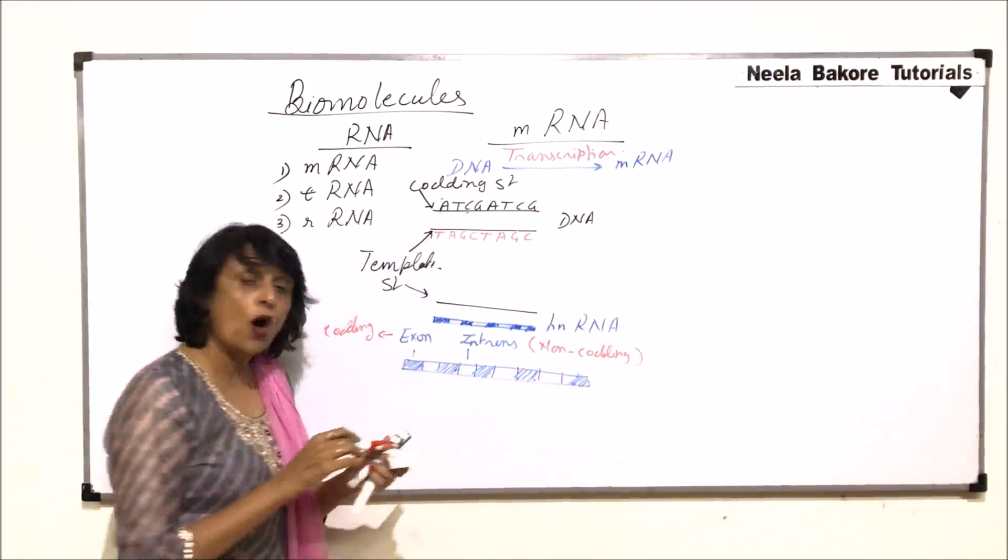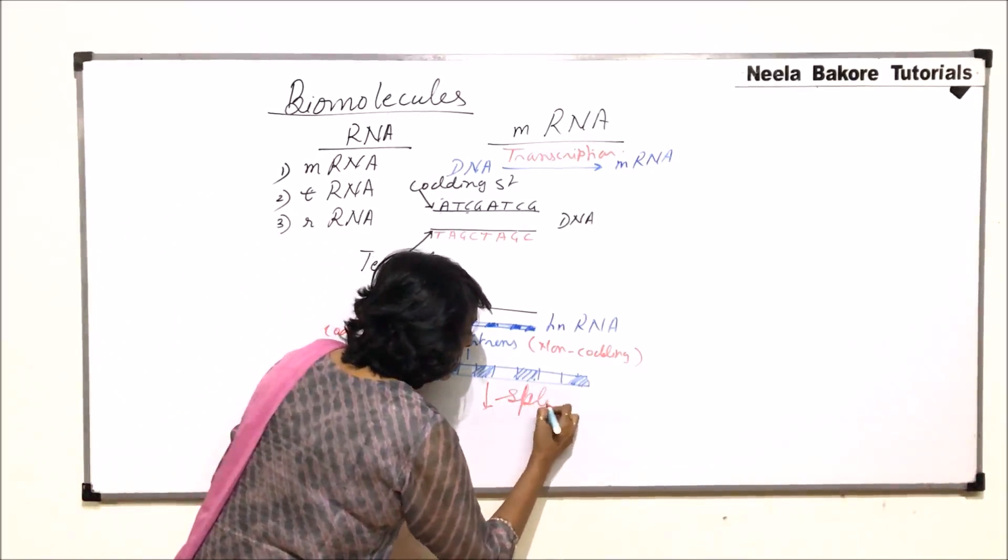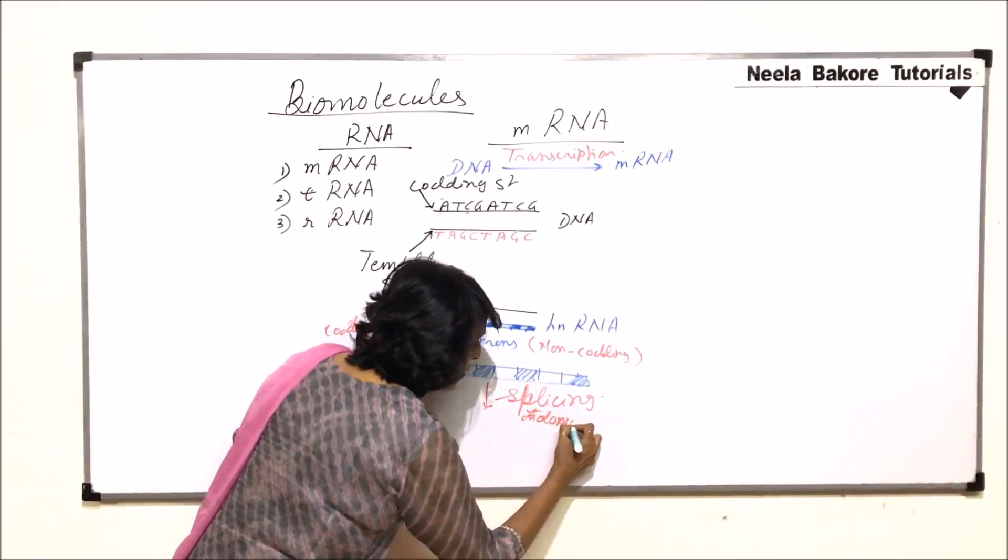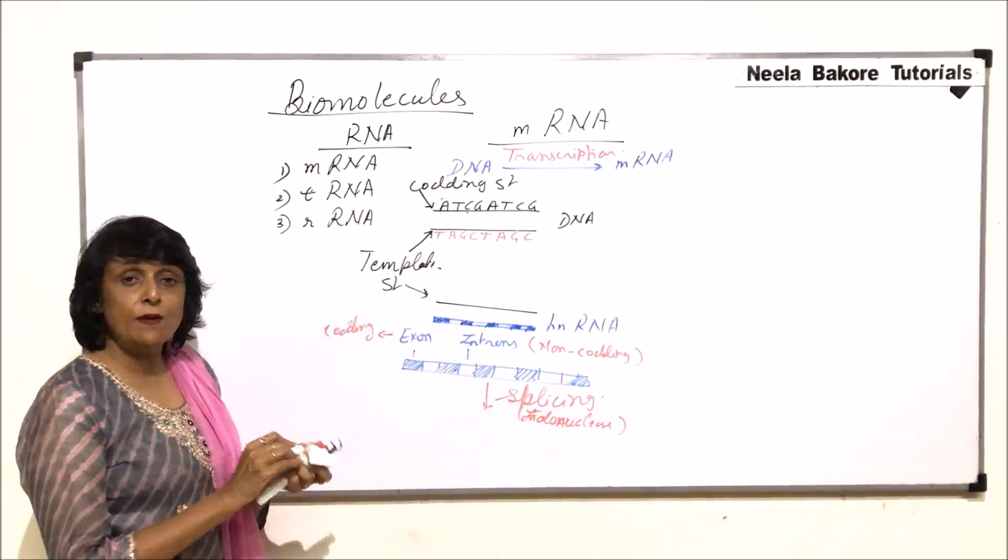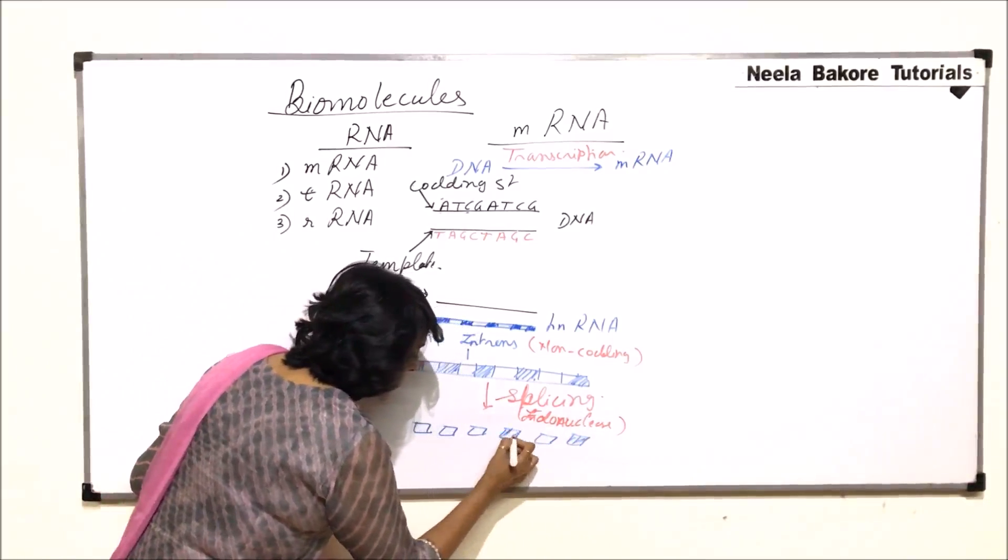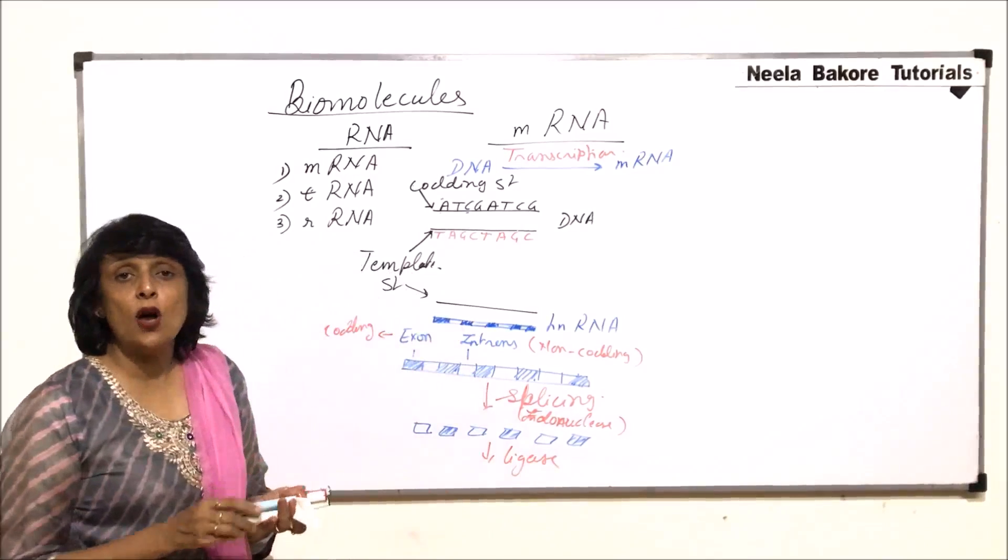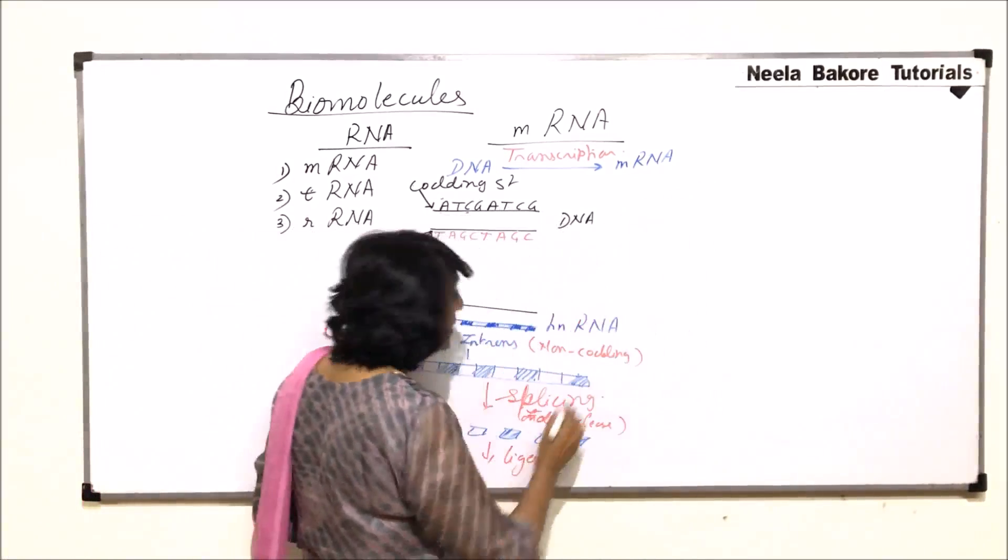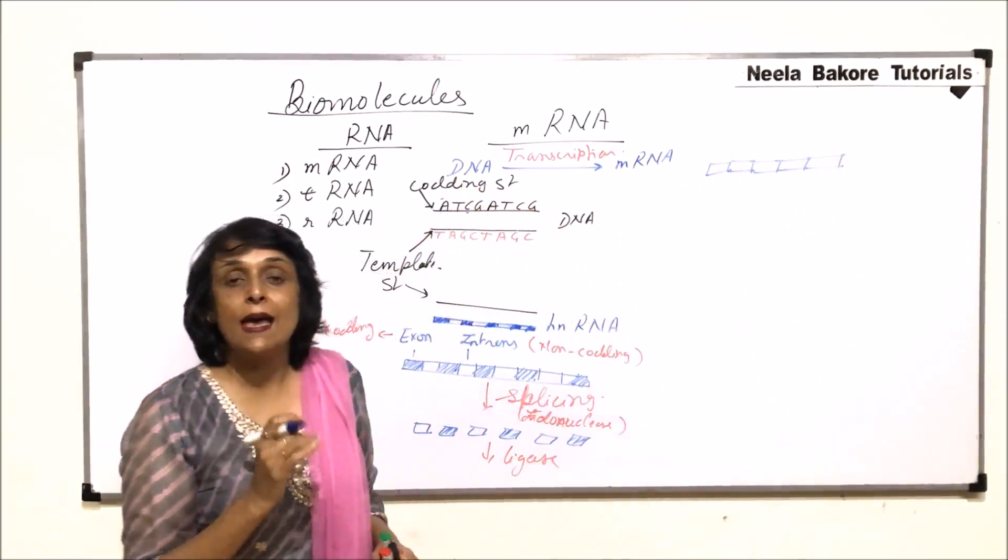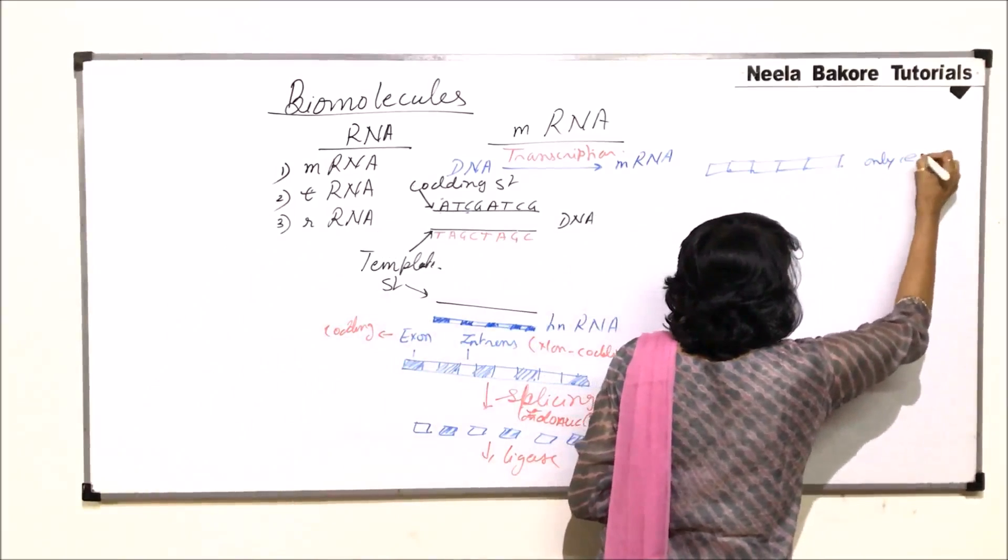So why should we have these non-coding parts? These should be removed. So this HnRNA undergoes splicing. Splicing is basically cutting it with the help of endonuclease. Endonuclease is the enzyme which is going to cut it. When we cut it, what we get? These exons, introns, exons, introns are cut. And now using another enzyme that is ligase only exons are joined. So after this we will continue here. Say this is one exon, next exon, next exon, next exon and next. So only exons have joined. Exons are only coding parts. So only exons have joined.